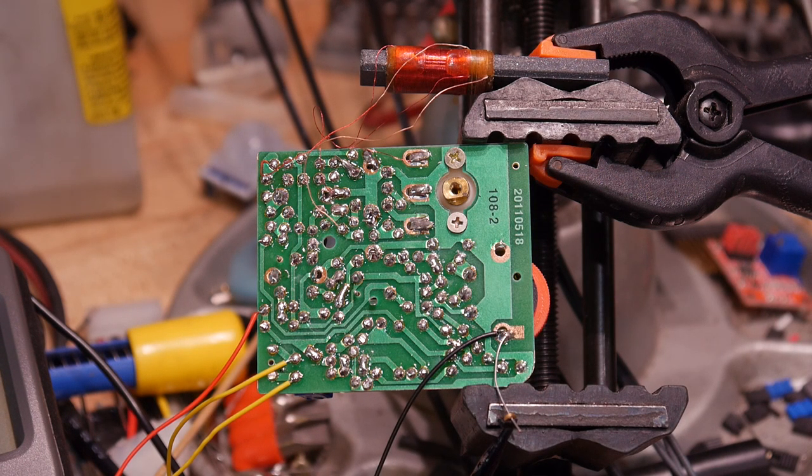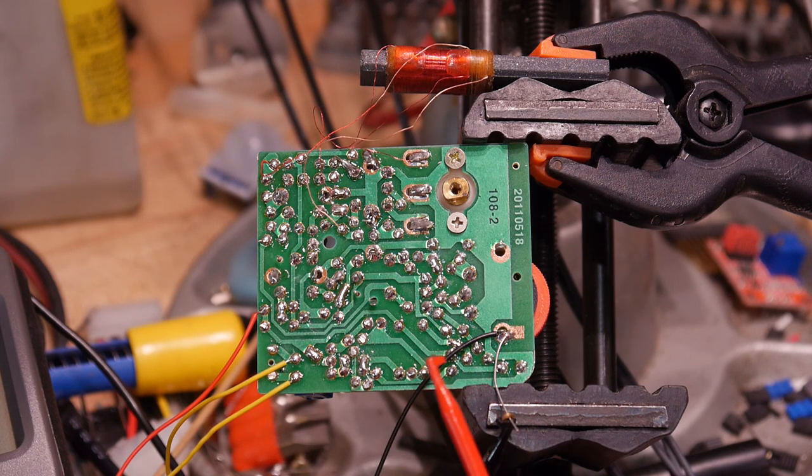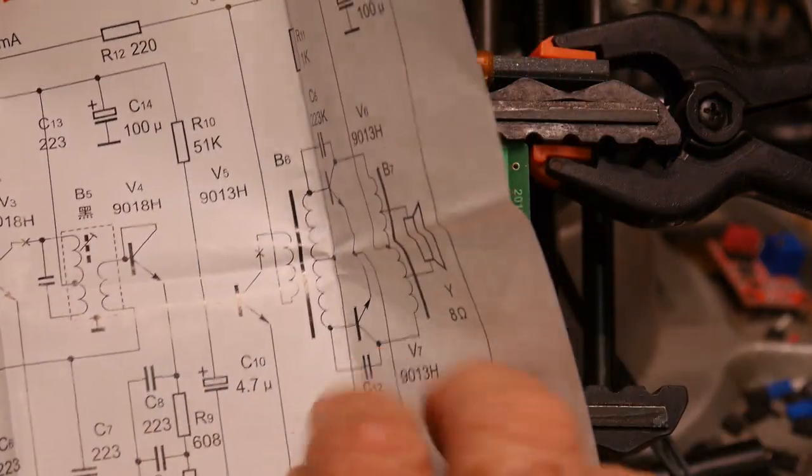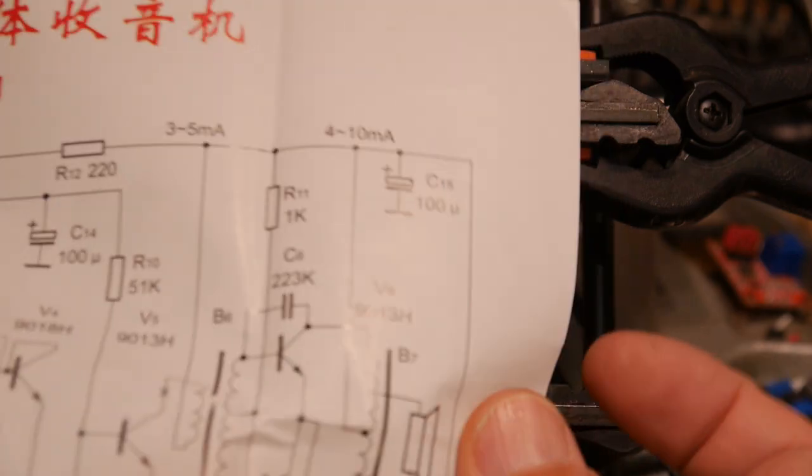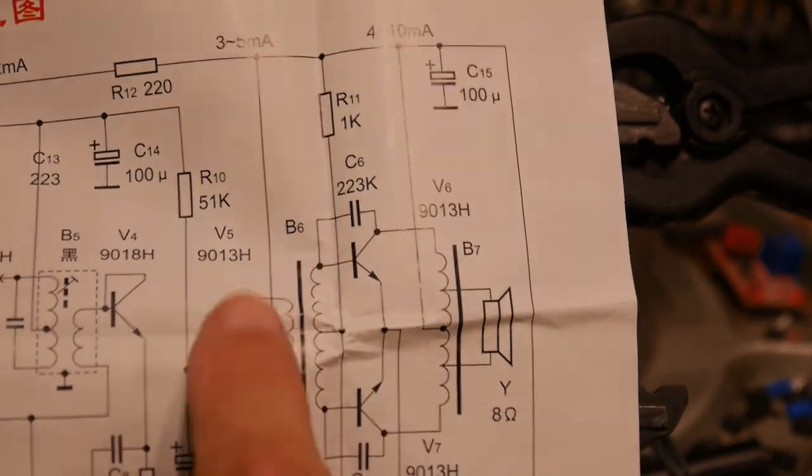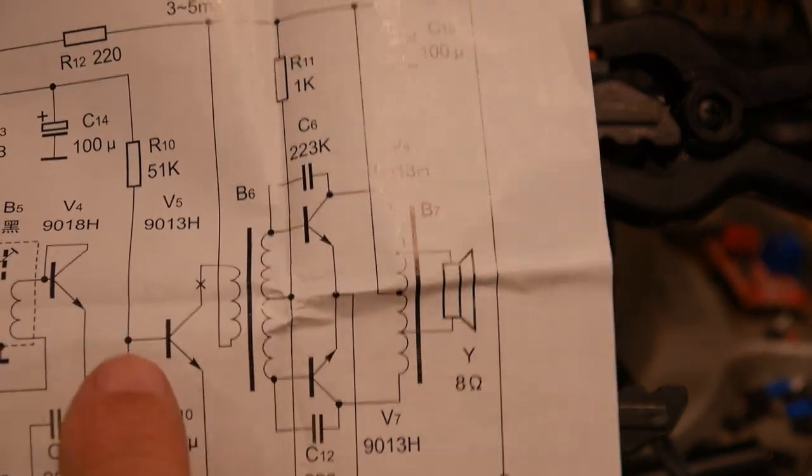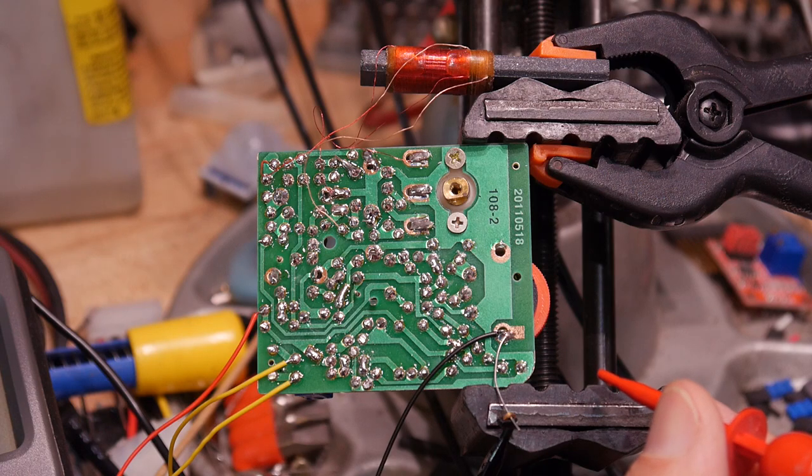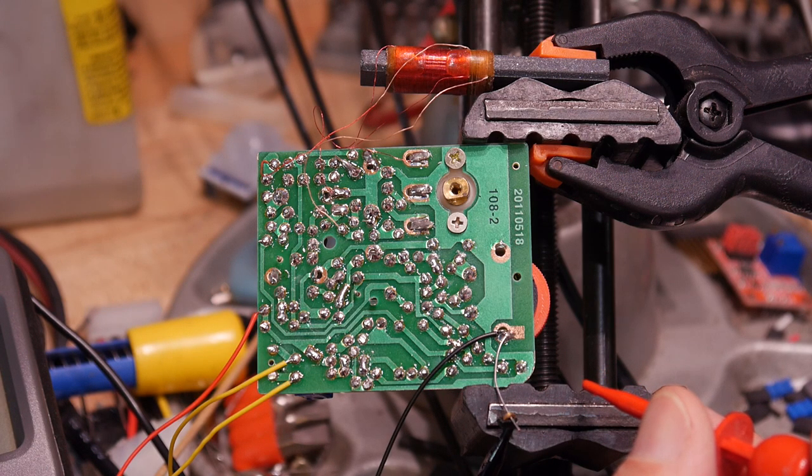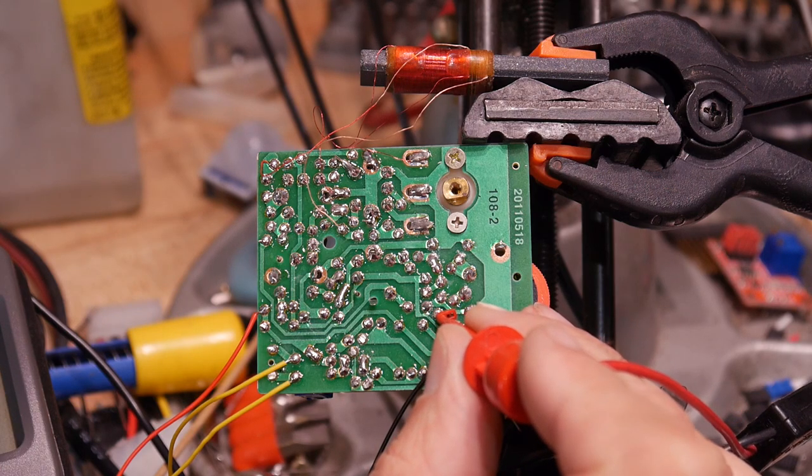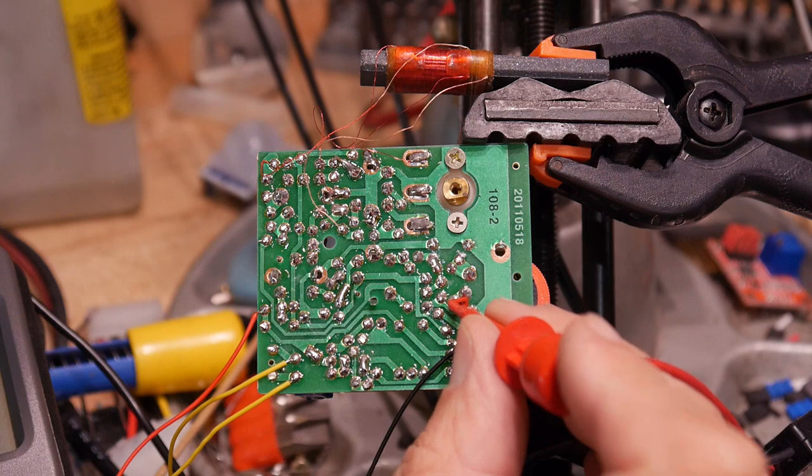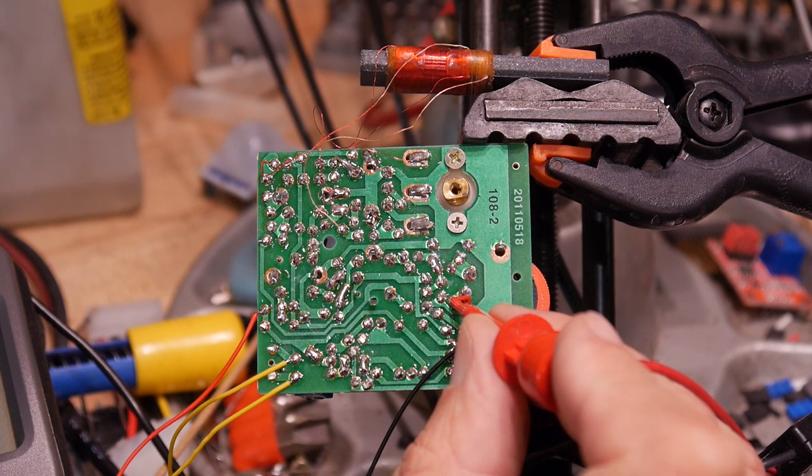So what I've done is I've connected a function generator up to this test lead here. And we're going to test the output section. So I'm going to see if I can inject an audio signal right here. And that audio signal should make it through these three transistors. And it's capacitively coupled right here. So I shouldn't blow up anything if I just attach something to the base of this transistor here. So our audio amplifier is working. So that's good.